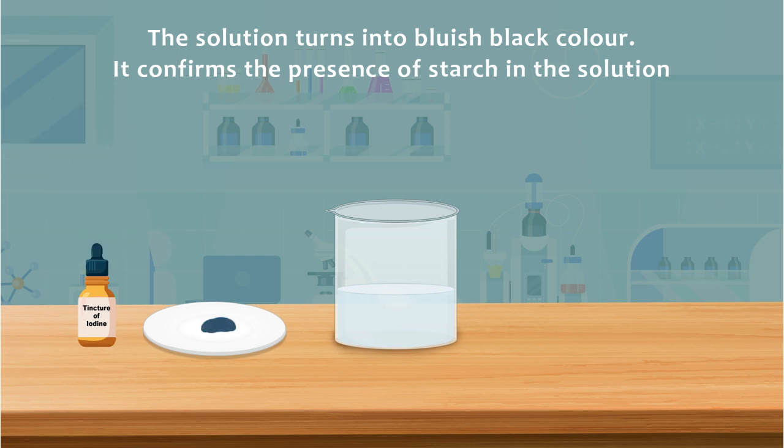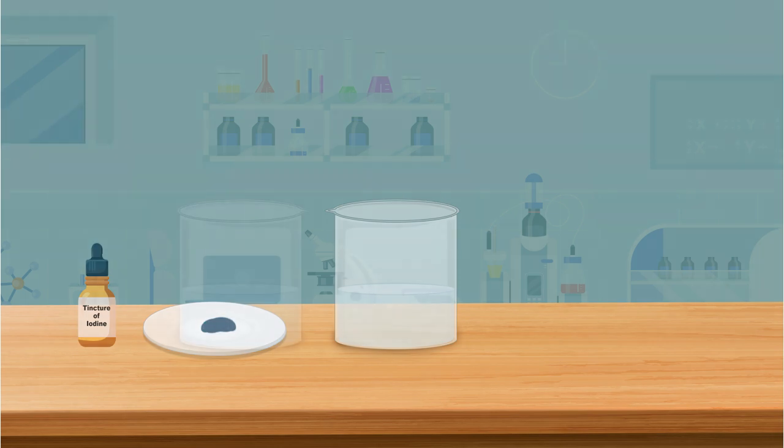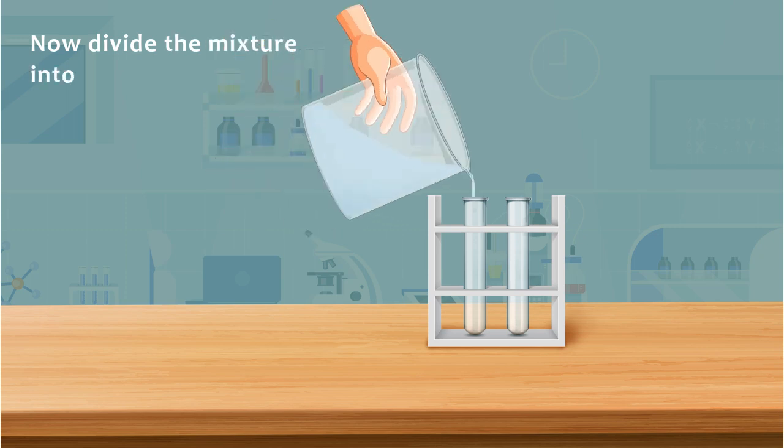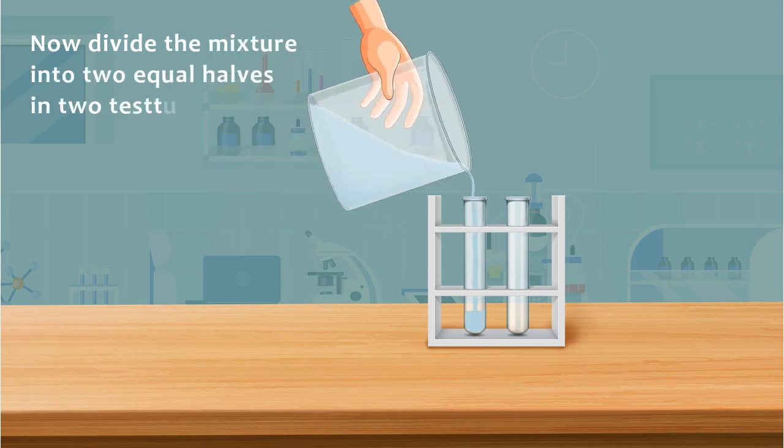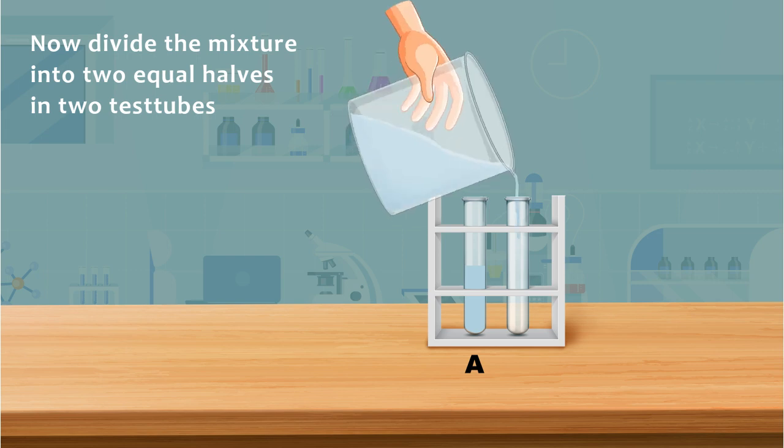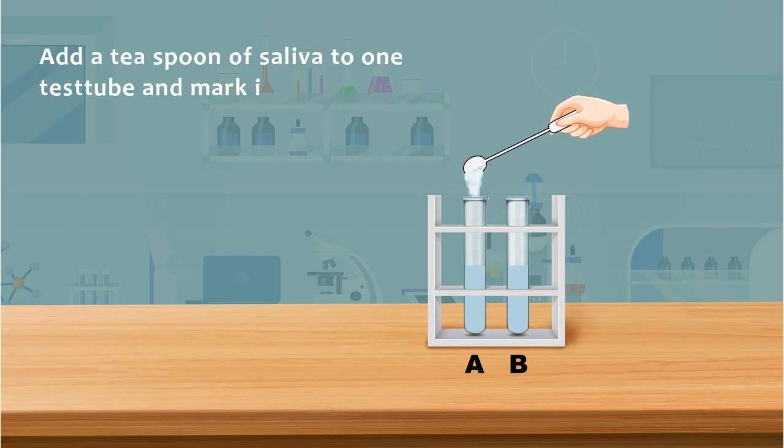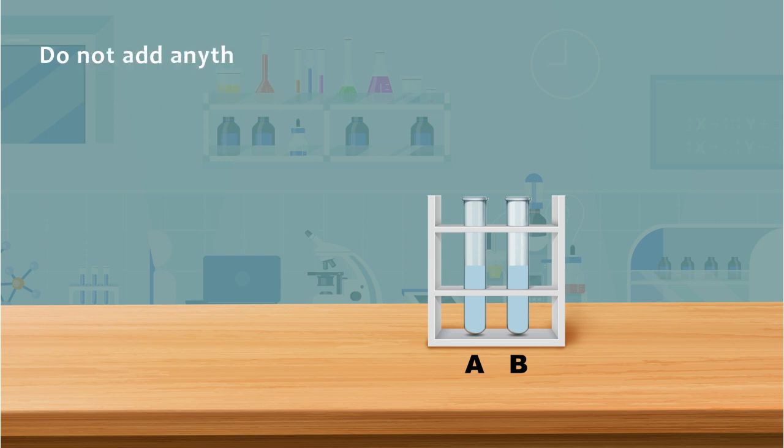It confirms the presence of starch in the solution. Now divide the mixture into two equal halves in two test tubes. Add a teaspoon of saliva to one test tube and mark it as A. Do not add anything in the other test tube B.